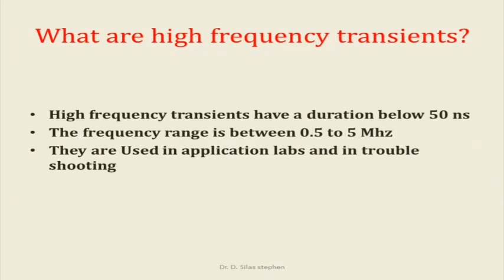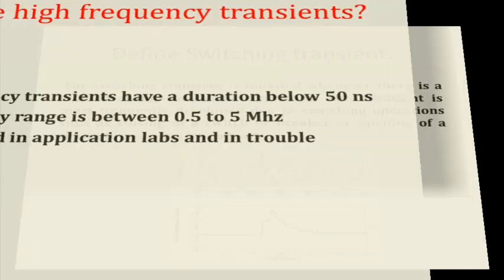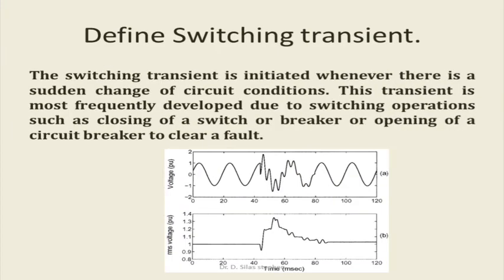What are high-frequency transients? High-frequency transients have a duration below 15 nanoseconds. The frequency range is between 0.5 and 5 MHz. They are used in application labs and in troubleshooting.